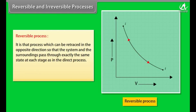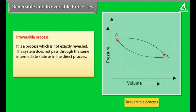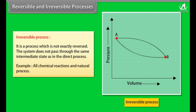Reversible process: a process that can be retraced in the opposite direction so that the system and surroundings pass through exactly the same states; electrolysis and slow compression or extension of a spring are examples. Irreversible process: a process that cannot be exactly reversed — the system does not pass through the same intermediate states as in the direct process; all chemical reactions and natural processes are examples of irreversible processes.